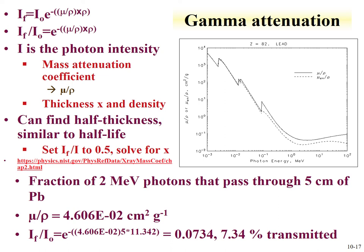Similar to radioactive decay, one can calculate a half-thickness analogous to half-life. For a given photon energy and mass attenuation coefficient, set I_final/I_initial = 0.5 and solve for thickness. This is useful as a rule of thumb — for example, for thallium-208's 2.6 MeV photon, knowing the half-thickness tells you how much material is needed to reduce the dose by half, by a quarter, or to one-eighth.